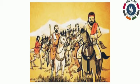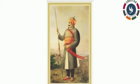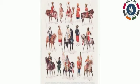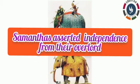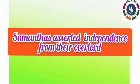Since samanthas were very close to the king, they gained enormous respect in society. They were given titles such as Maha Samantha and Maha Mandalishwara — meaning 'the great lord of the circle of the region' — making them like a king of a particular region. After that, they asserted their independence from their overlord.